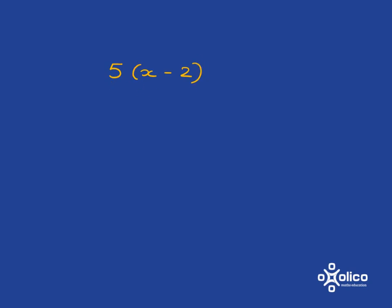And because 5 is multiplied by the brackets, what you've got to do is make sure that 5 multiplies with each and everything that is inside the brackets. And that's what the distributive law is.